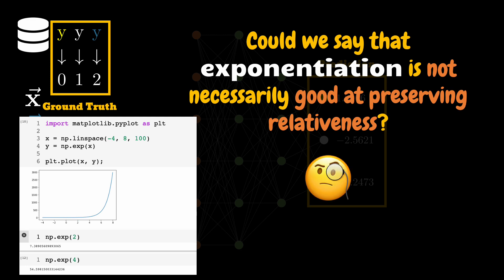That said, we can conclude that exponential function is not necessarily good at preserving the relativeness in the outputs that it generates. A further conclusion is that the neural networks that use softmax tend to be overconfident with the predictions. They tend to assign higher probabilities to the scores that may not be much bigger than other scores because of the exponential operation.